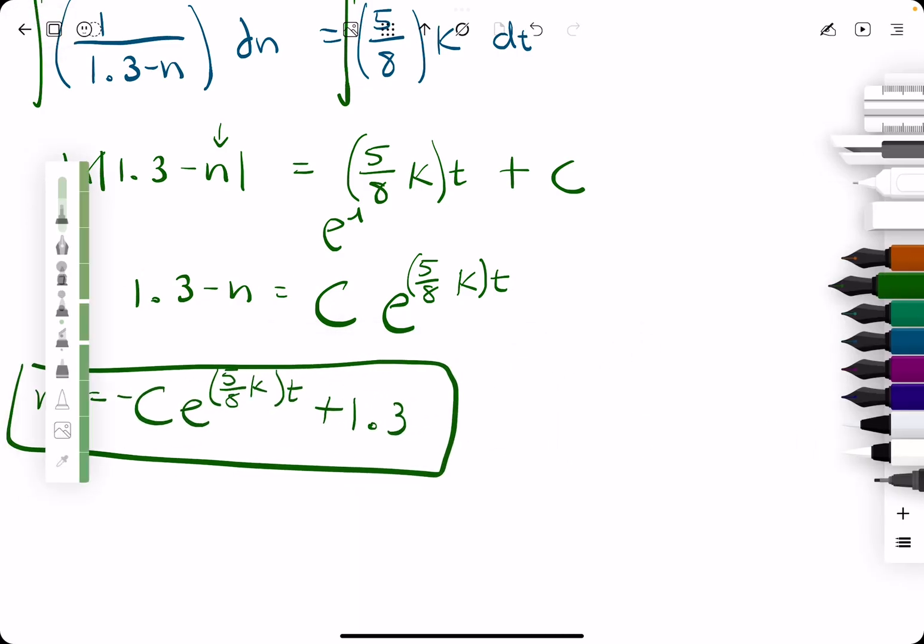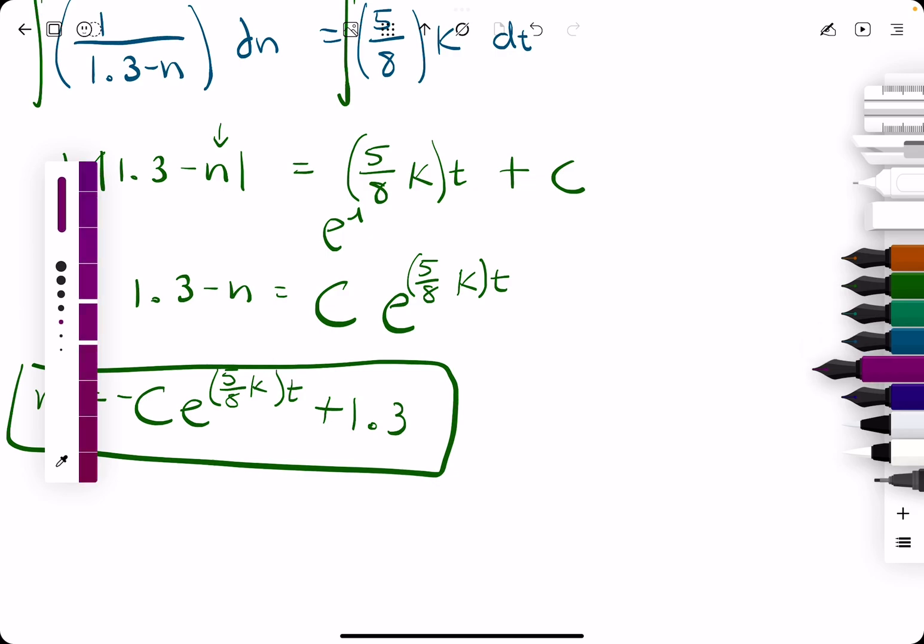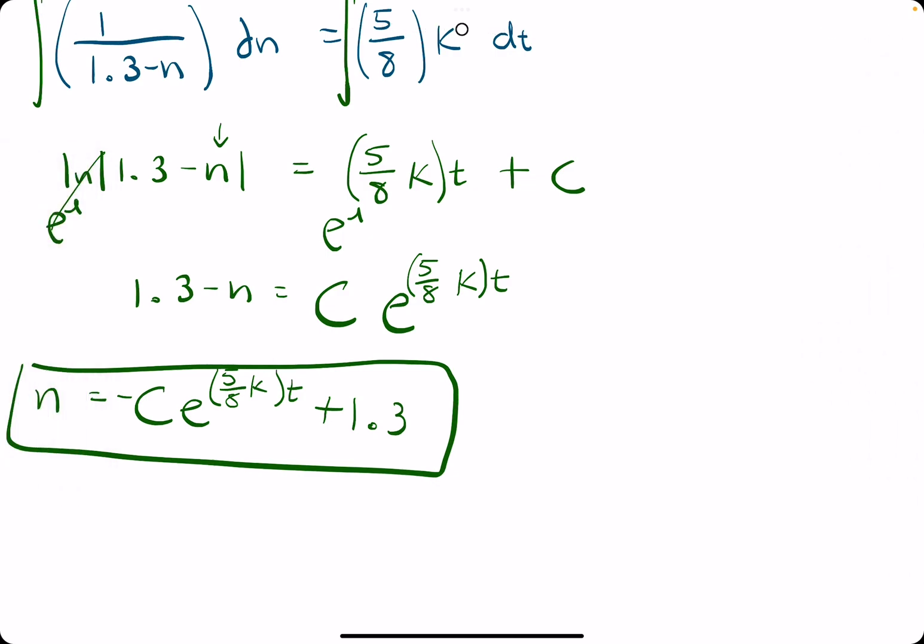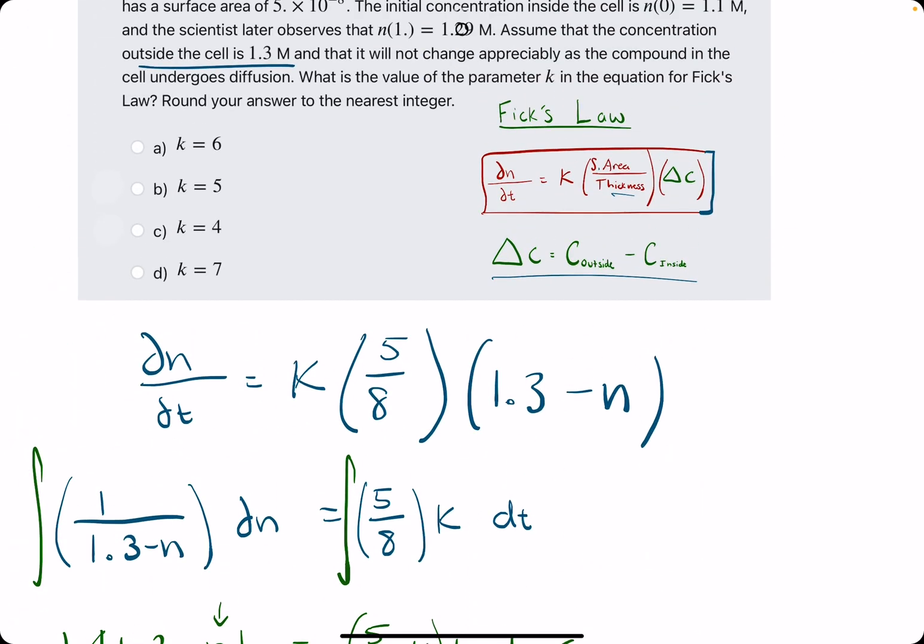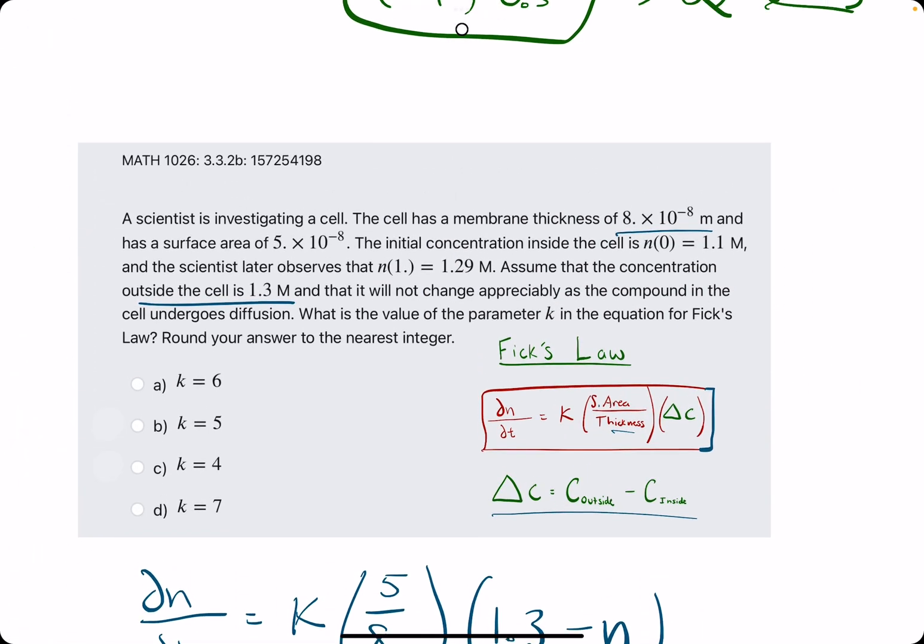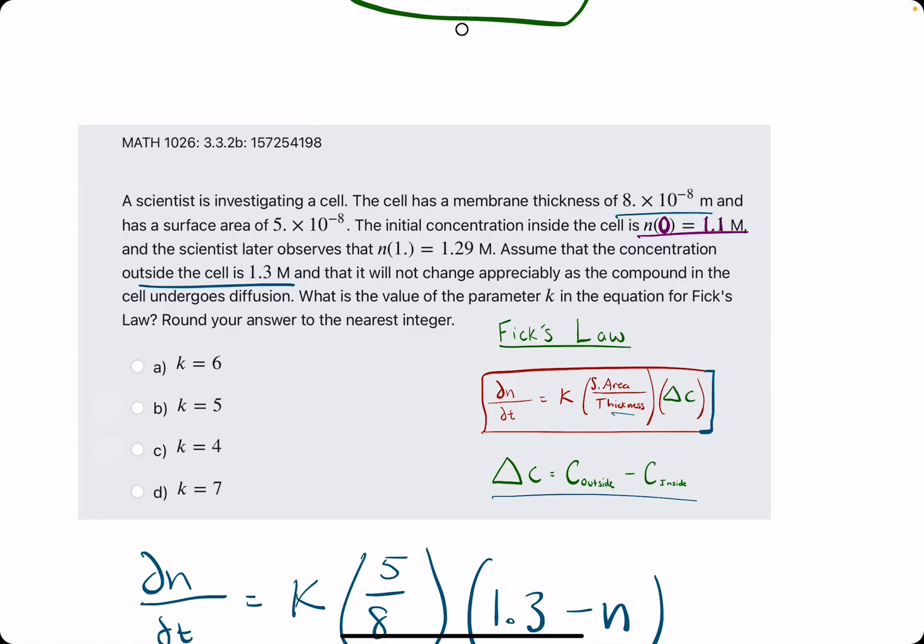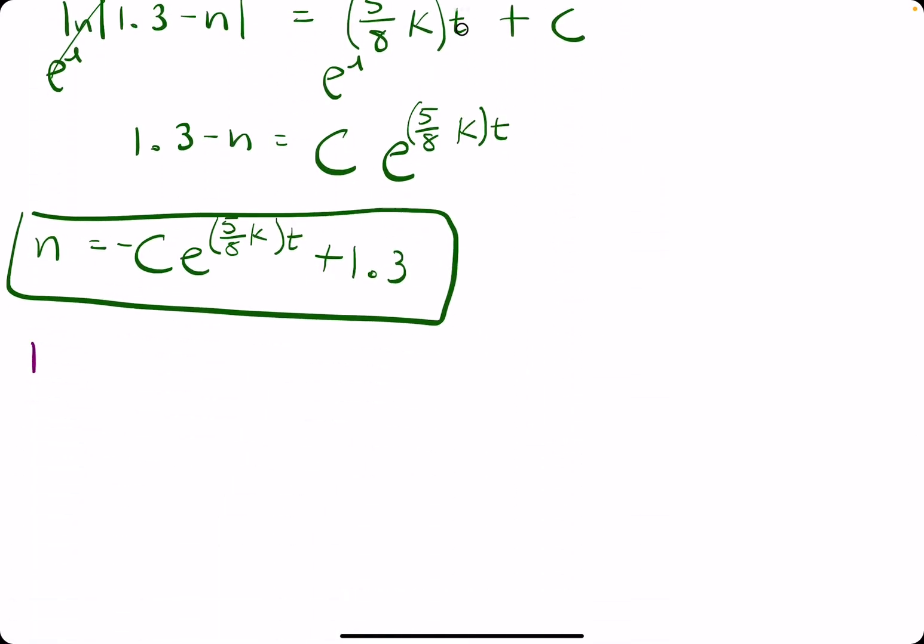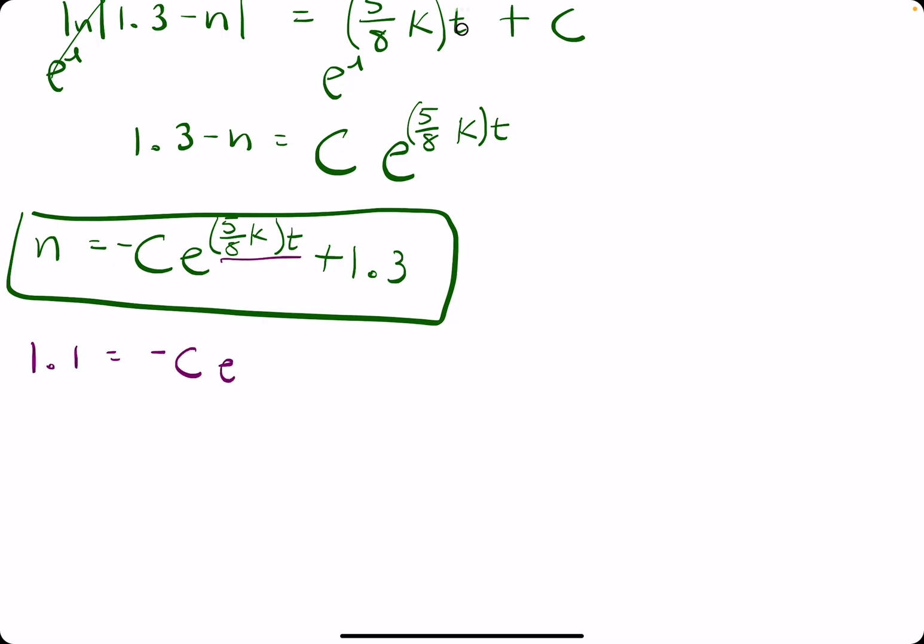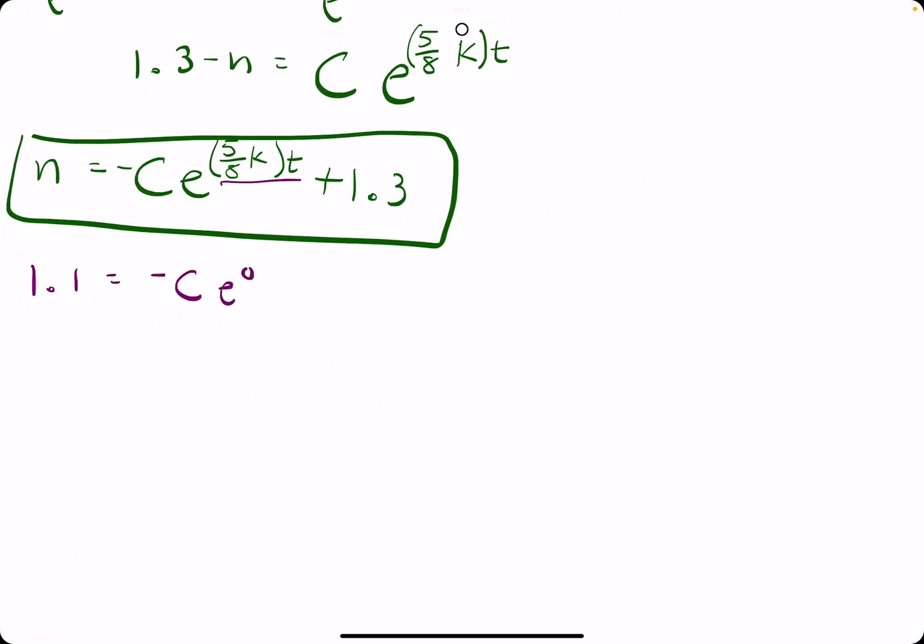The first thing we want to do is use this to solve for c. So, we will solve for c by using the initial condition. That is, when time is 0, the n value is 1.1. So, plugging in 1.1 for n and 0 for t there will make the whole exponent 0. So, e to the 0 is just 1.